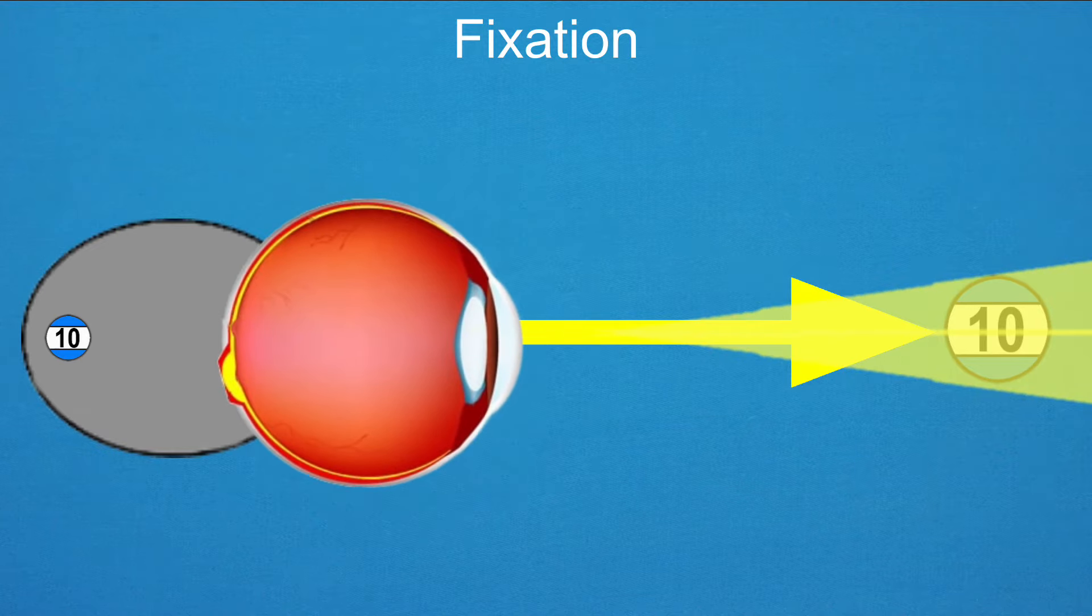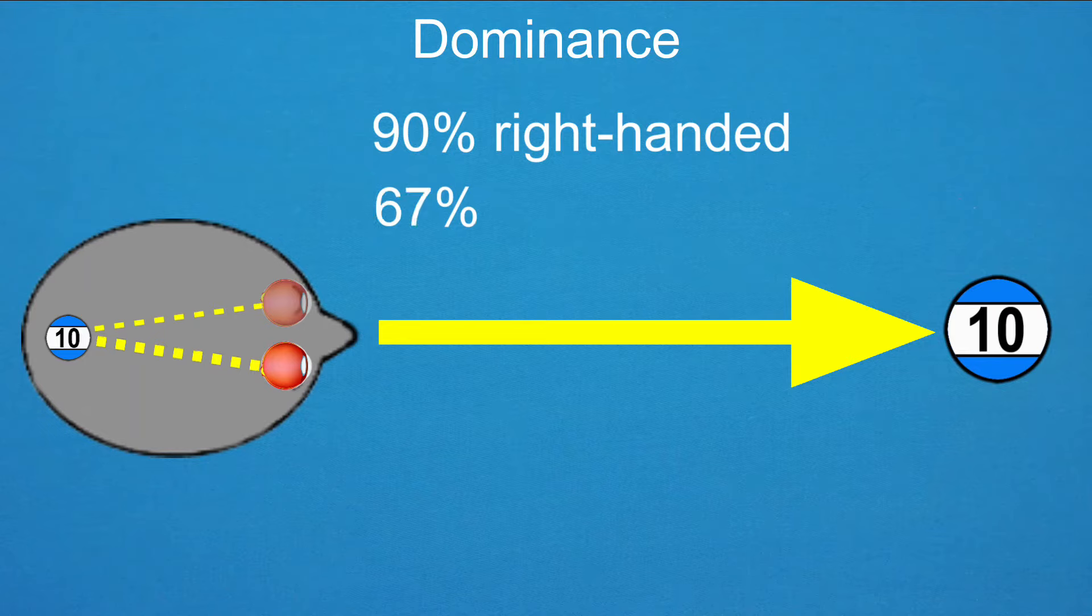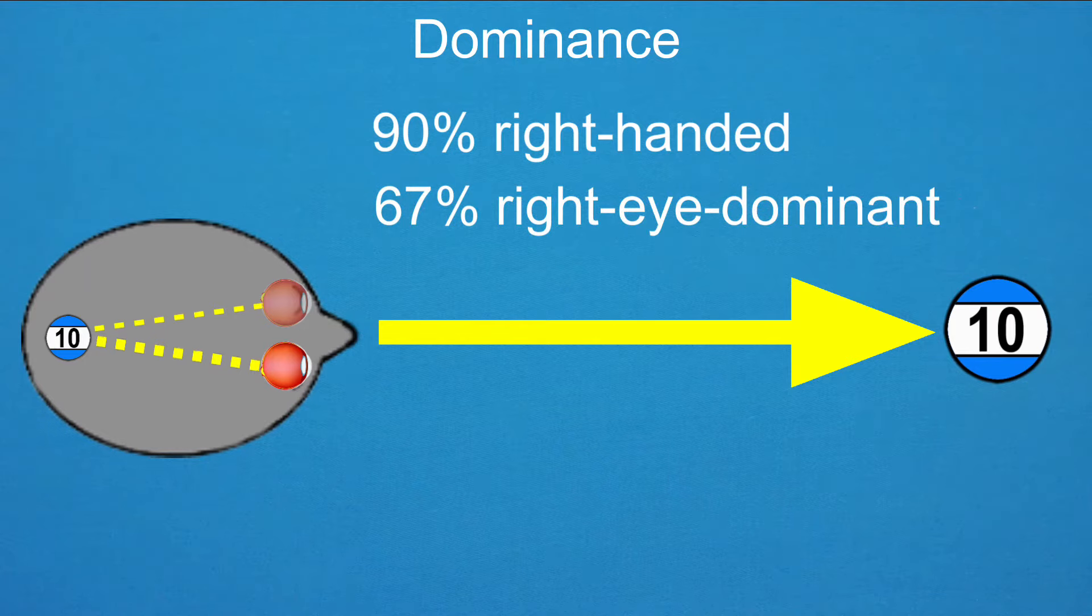When combining images from each eye, the brain gives dominance to one eye. Eye dominance is similar to being right or left handed, in that we all have it. About 90% of humans are right handed, while just 67% of humans are right eye dominant. So cross-eye dominance, for example being right handed but left eye dominant, isn't too unusual.